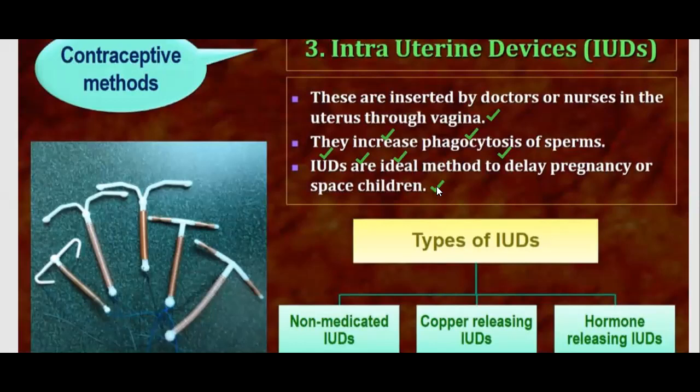The types of IUDs are: non-medicated IUDs, copper-releasing IUDs, and hormone-releasing IUDs.